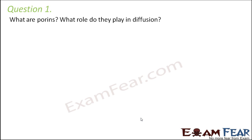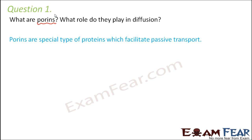Question: what are porins and what role do they play in diffusion? Porins are a special type of proteins which act as pores — that is why they are called porins, derived from the word 'pore'. They are modified as pores so that they can help substances move from outside the cell to inside the cell, facilitating passive transport, that is facilitated diffusion.